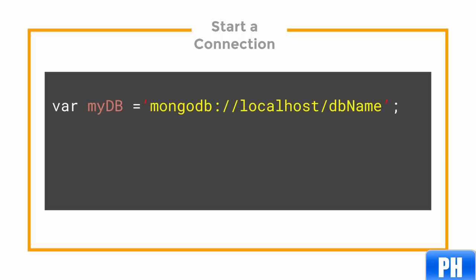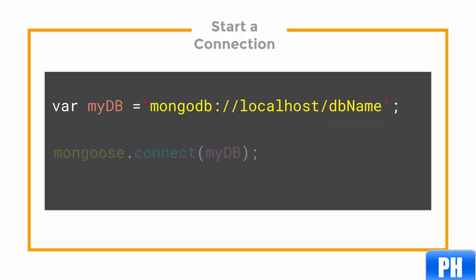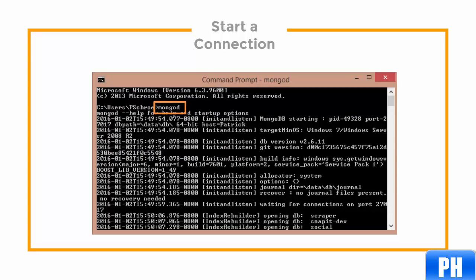With the schema all set up, all we need to do now is establish a connection to MongoDB. First, we create a variable assigned to our instance of the database. The DB name can be anything that you want — it just represents the name of the database that we use. And then we just use mongoose.connect to connect to it. Just make sure that you always remember to have mongod running in your terminal, otherwise you'll get an error.